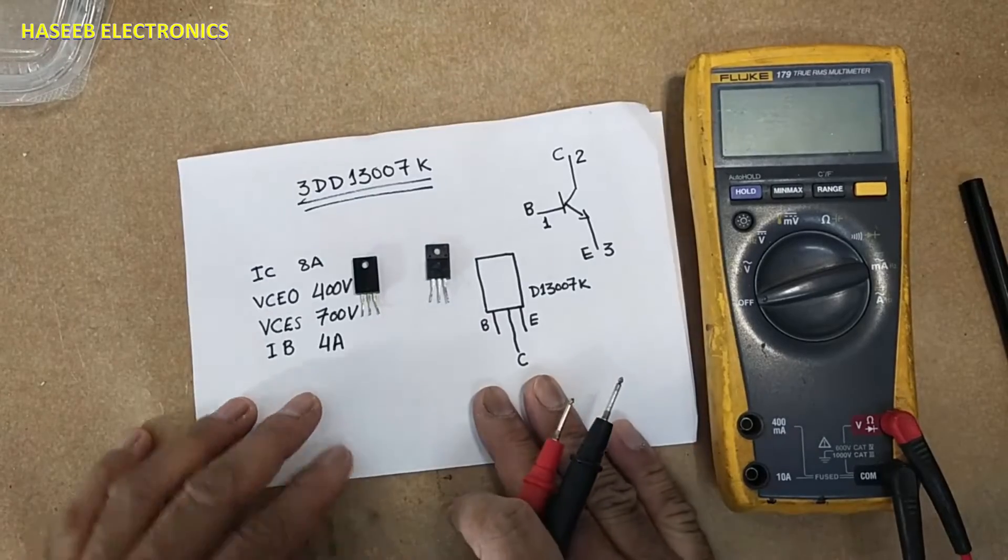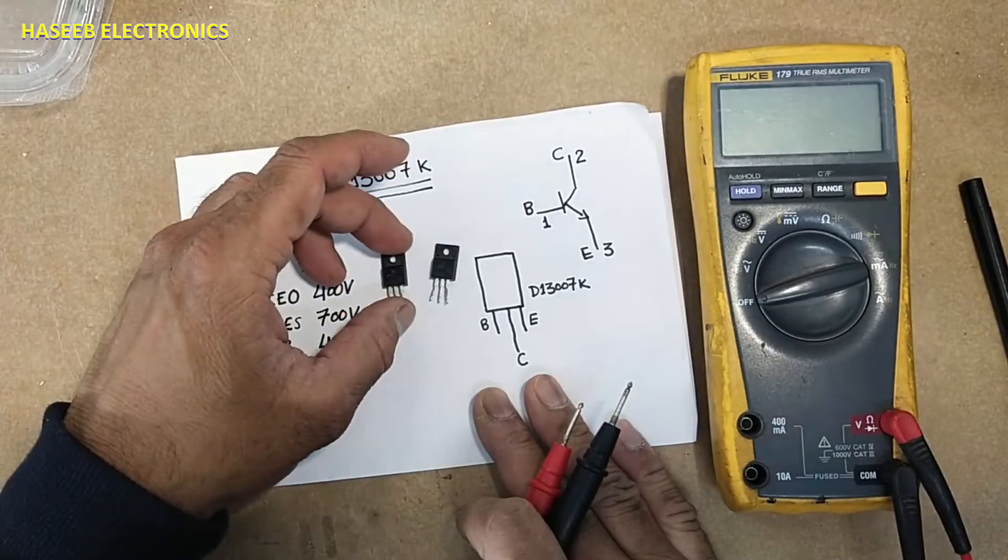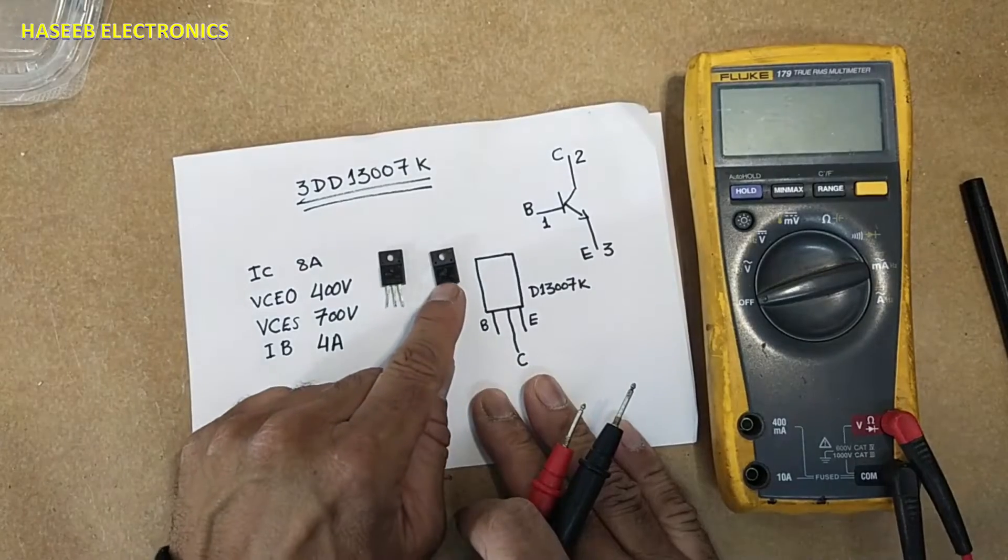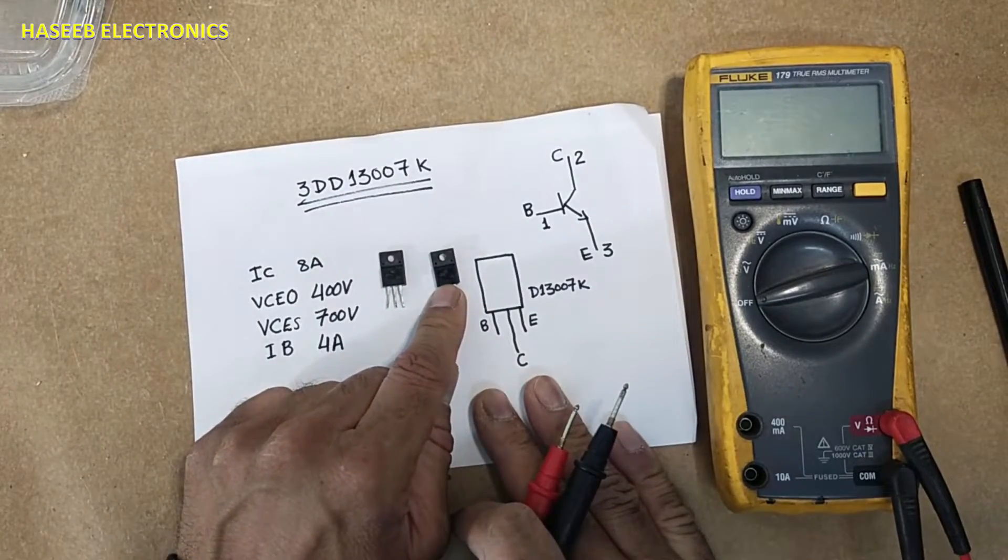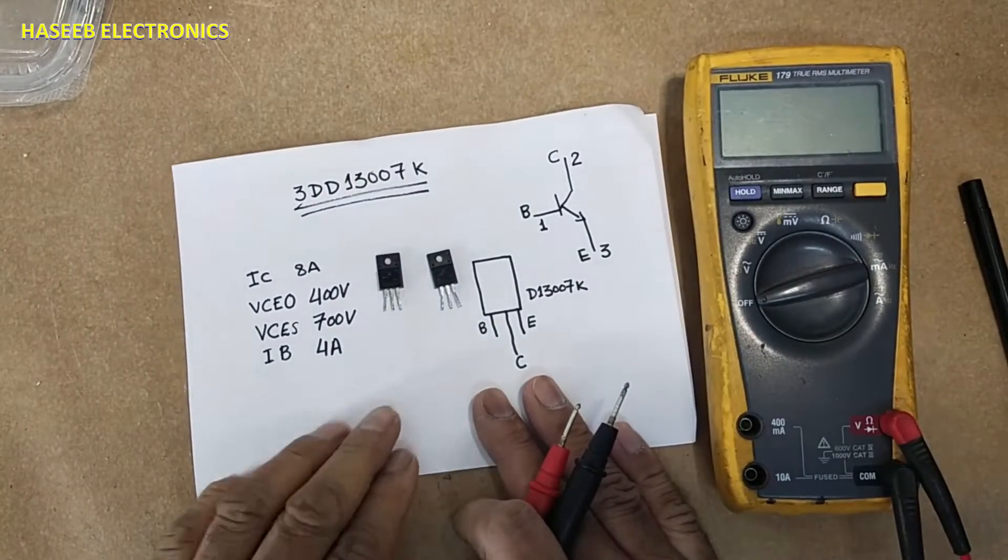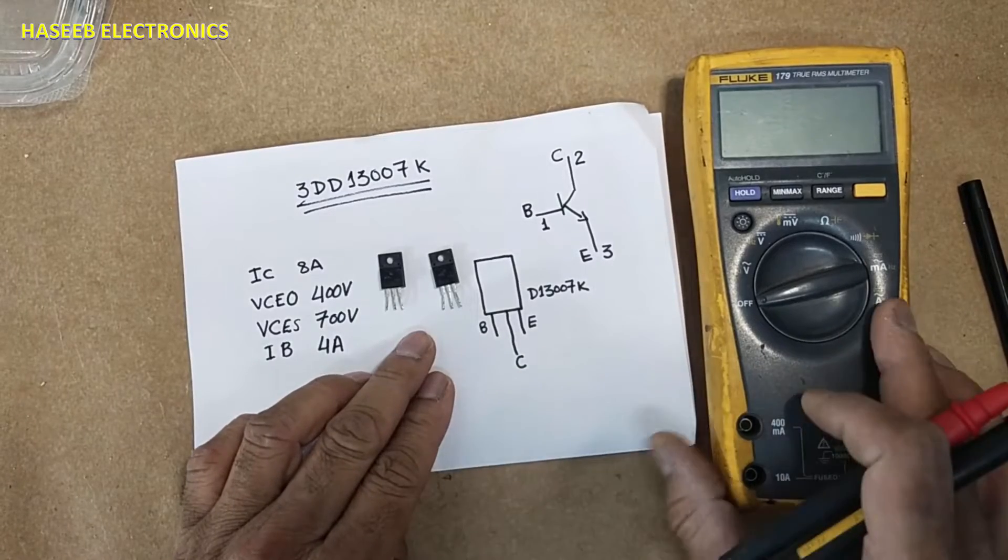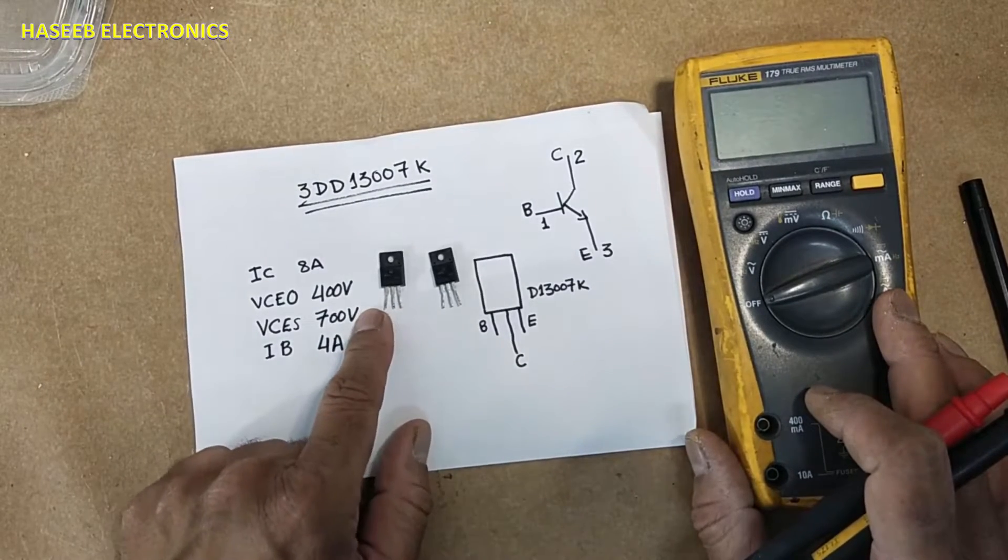Assalamu alaikum wa rahmatullahi wa barakatuhu friends, welcome back to my channel. The D13007K transistor is most of the time used in power supplies. How we can find a good and a bad transistor?